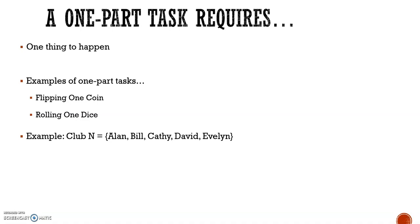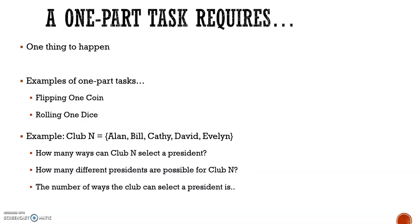An example: we'll talk about Club N, including Alan, Bill, Kathy, David, and Evelyn. How many ways can Club N select a president? The number of ways the club can select a president is either Alan, Bill, Kathy, David, or Evelyn. The answer is five.